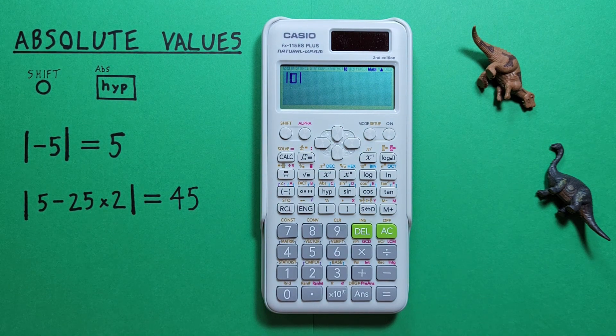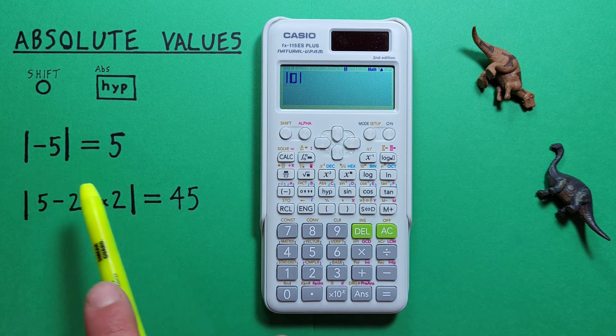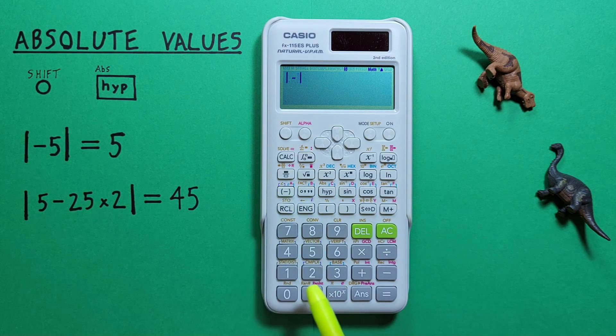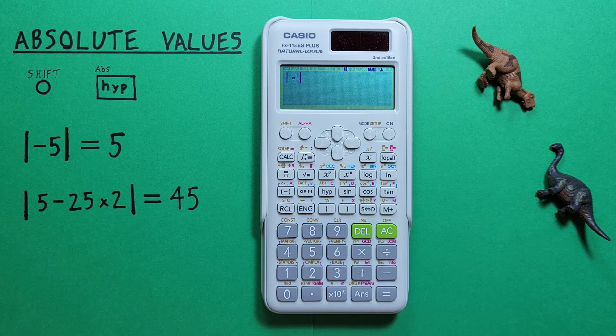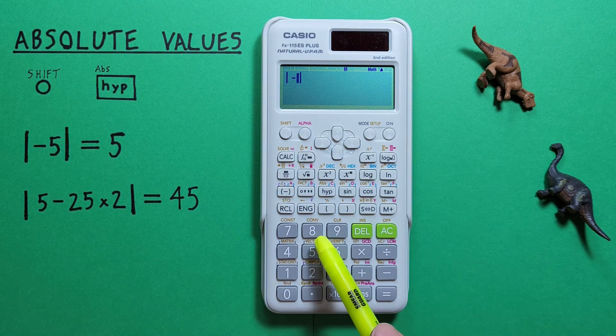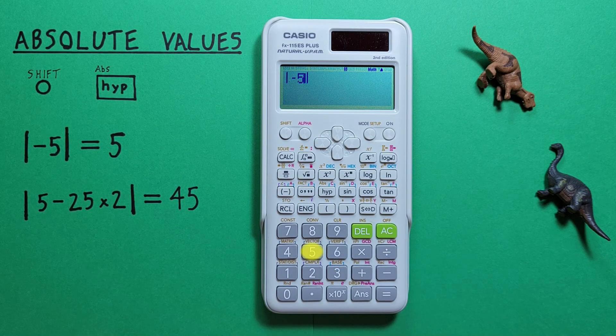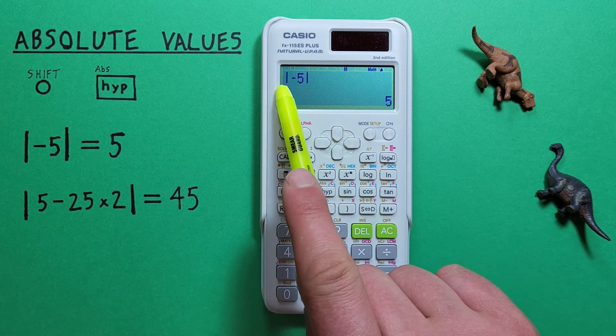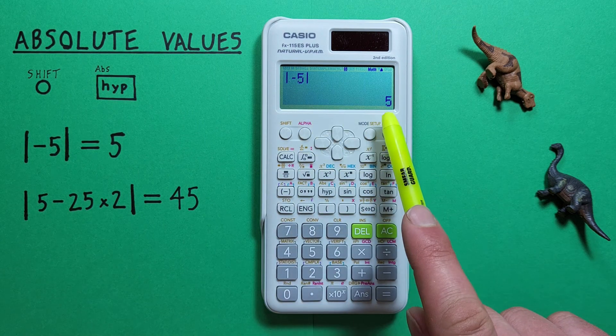Now we enter our negative 5, so we hit negative, and it's important to remember to use the negative key, not the subtraction key when entering negative numbers, and then the 5, and press equals. And we see we get the absolute value of negative 5 is 5.